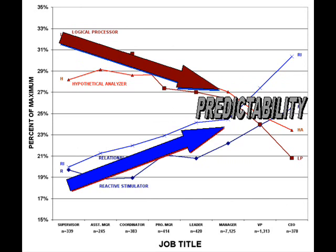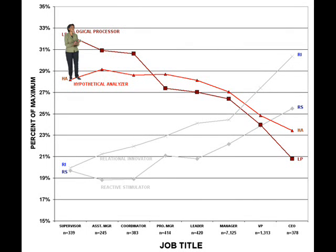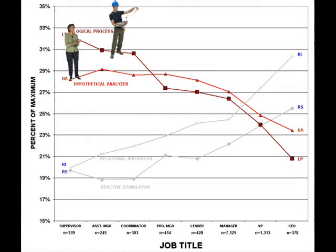The factor that accounts for the divergence between the structured and unpatterned trend lines is predictability. The success of the LP style depends on the LP's action-based procedures actually working in practice. Similarly, the methods used by the analytical HA must actually reflect a reality that will come true in the future.